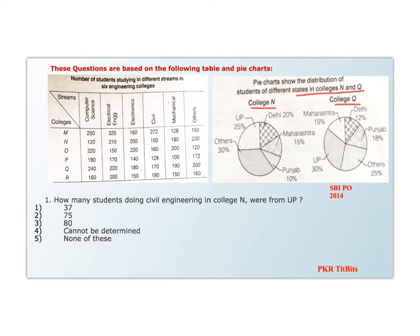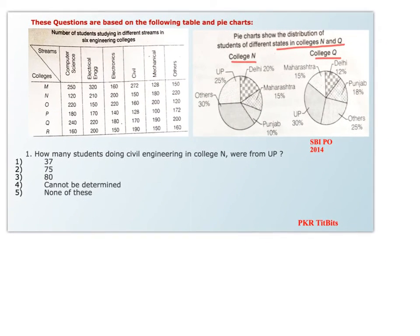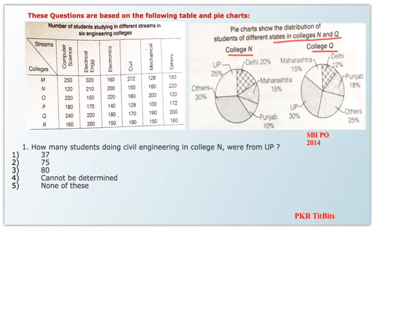The first question asks: how many students doing civil engineering in college N were from Uttar Pradesh? The percentage distribution in the pie chart is for the total number of students in college N. In Uttar Pradesh it is 25%, so we get 25% of the total for college N, but they are specifically asking about civil engineering, which we cannot derive directly. So the answer is option 4: cannot be determined.